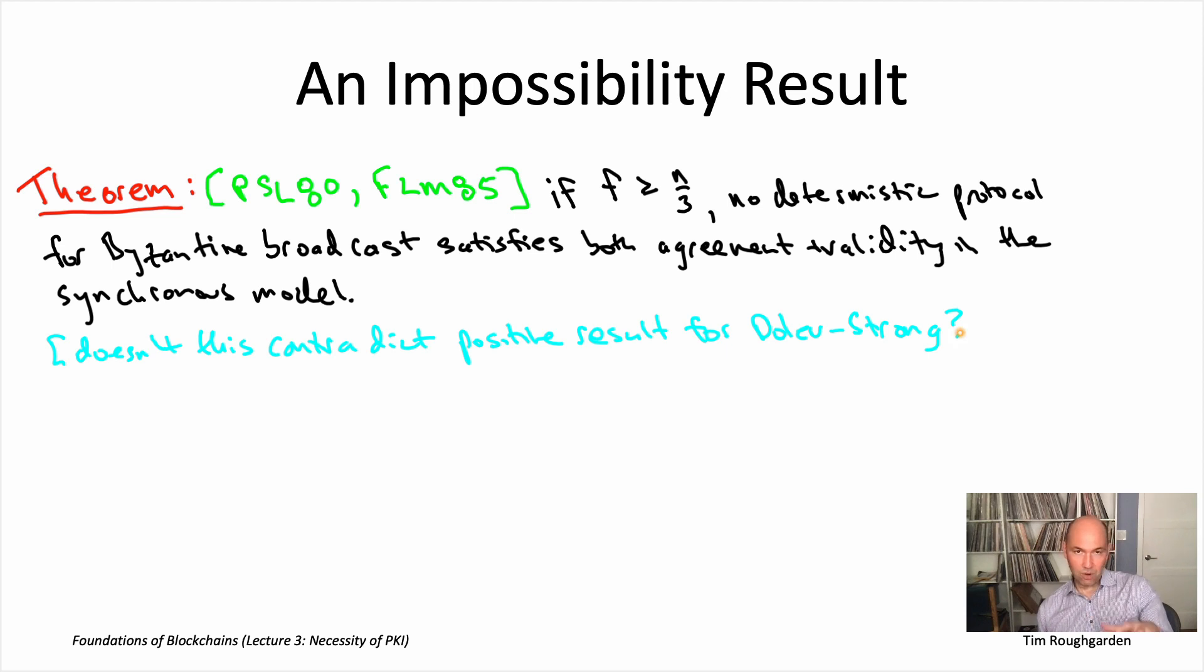Why doesn't this impossibility result contradict the guarantees we proved for the Dolev-Strong protocol? And it's not that either of the proofs is incorrect. Both of the proofs are correct. But as you might expect, they're under slightly different sets of assumptions. And so what we're going to see is the assumptions really matter, and particularly the cryptographic assumptions really matter, of whether or not you can have highly fault tolerant solutions to Byzantine broadcast in the synchronous model.